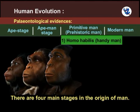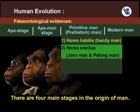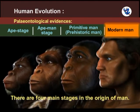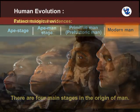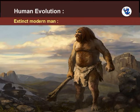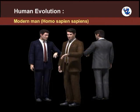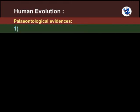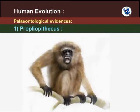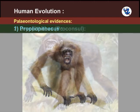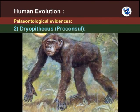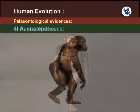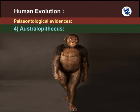Important primitive men include Homo habilis (handy man), Homo erectus (Peking man) and Homo neanderthalensis (Neanderthal man). Modern man includes all existing men and some extinct men. Cro-Magnon man, called Homo sapiens fossilis, was the extinct modern man, and modern man today is called Homo sapiens sapiens. Important human ancestors reconstructed from fossil records include Propliopithecus, an ape-like primate; Dryopithecus (Proconsul); Ramapithecus, an ape-man-like primate; and Australopithecus, the first fossil found as a skull cap of a child.